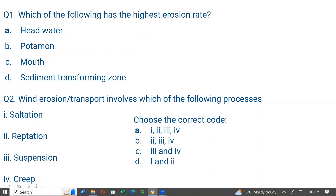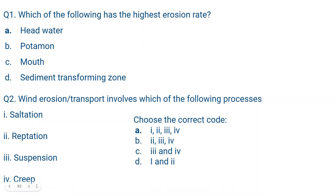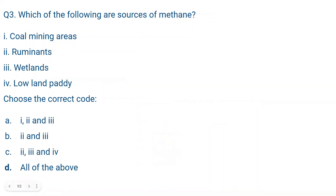Question number three: Which of the following are sources of methane? A. Coal mining areas, B. Ruminants — when ruminants digest, methane is released, C. Wetlands (daldali zameen), D. Lowland paddy fields. All of these options are correct, so D — all of the above — is the correct answer.